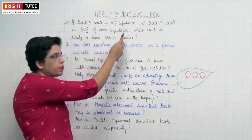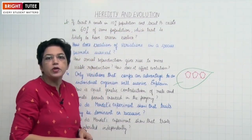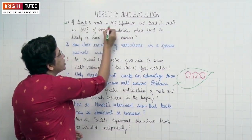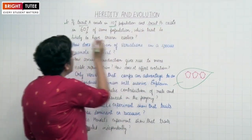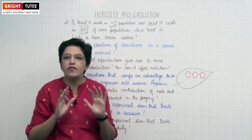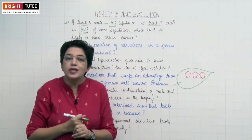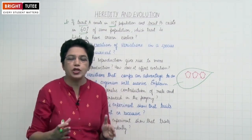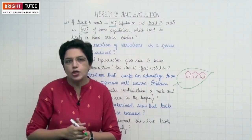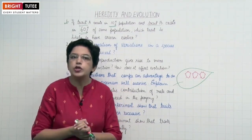If trait A exists in 10% of a population and trait B exists in 60% of the same population which reproduces asexually, which trait is likely to have risen earlier? In asexual reproduction, variations are very limited and the next generation are almost exact copies of the parents. So if a trait is present in a large population, it has been there for a longer duration. Therefore, trait B had a rise earlier because it is present in the larger population.